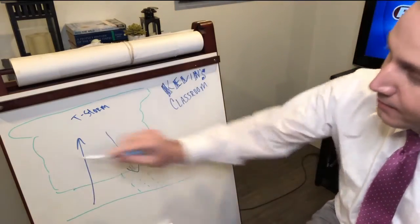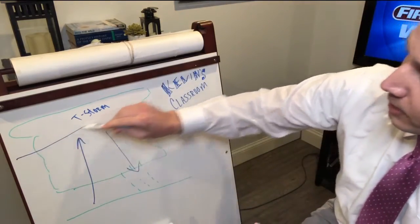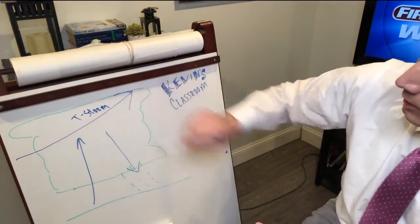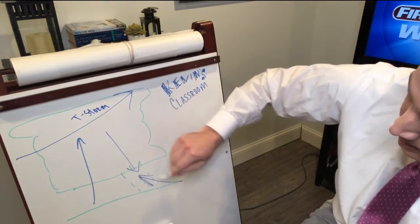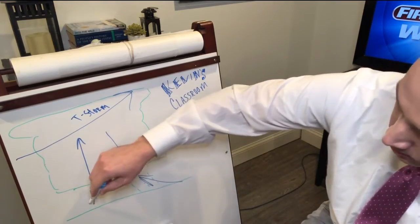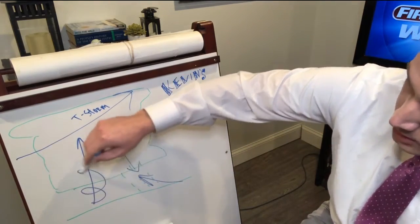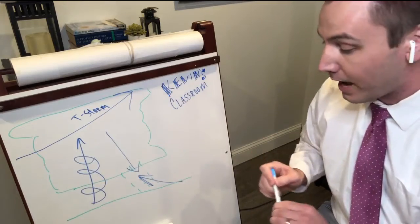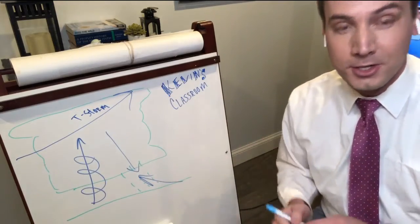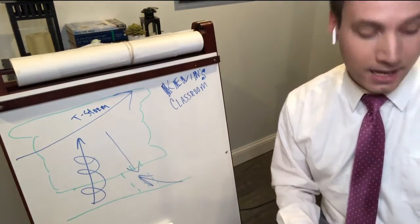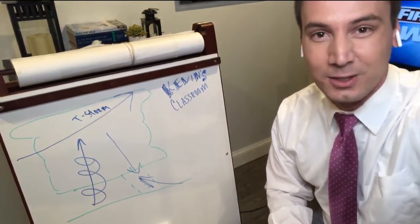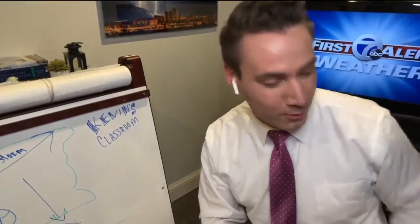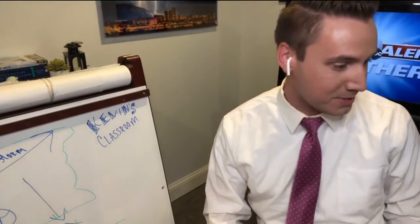In order for these to form, you have to have upper level winds going in a certain direction and lower level winds in another direction, so there can be some rotation within these updrafts. Axel, that's a great question. Love the anemometer by the way — his little weather station next to him. Great question for Kevin's classroom today.